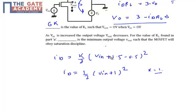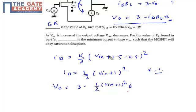We are finding the condition of V0 — this is the more general case. My VGS is VIN + 1.5 here. So if I substitute the value of ID into the expression V0 = 3 - ID·RL, my V0 will be 3 minus half of (VIN + 1)² times RL, where RL is 6 kΩ. Currents are in milliamps and resistances in kilohms.